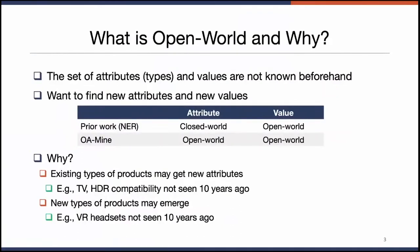Traditionally, Product Attribute Mining is done with a closed-world assumption on the attributes, which means you have to specify the set of attributes you want to extract — for example, brand, color, and item form. You annotate your data and build a named entity recognition model, typically a sequence tagging model. But here, we're doing a more challenging problem with a fully open-world assumption, where we want the model to find both new attributes and new values.